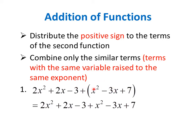the terms will retain their signs. So you have plus x squared minus 3x plus 7. Let's simplify this expression. We have 2x squared terms.